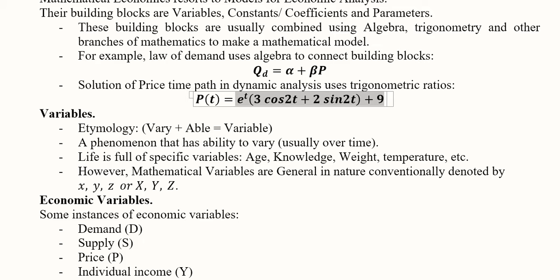The etymology of 'variable' is simply the ability to change. A variable is a phenomenon that changes usually over time — as time passes, the variable changes its value. However, due to other exogenous factors, a variable can change as well, not because of time but because of some external variable affecting it from outside our analysis.